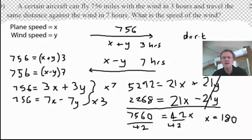Now, what that is, is you just found the speed of the plane without any wind attached to it. Now, you can just go back into any one of these equations and figure out what y will be.